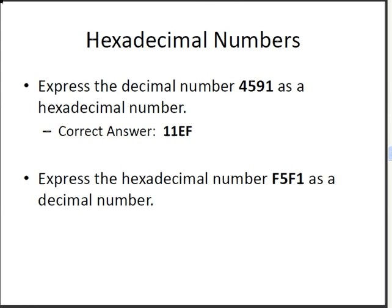The correct answer to the first part is 1, 1, E, F. Now, the second part of this presentation is finding the decimal equivalent of the hexadecimal number F5F1. So, express the hexadecimal number F5F1 as a decimal number.